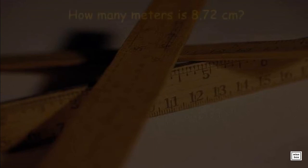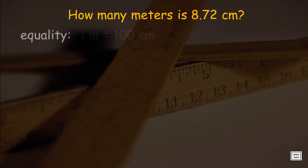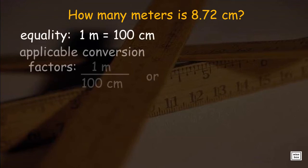Let's try this: how many meters is 8.72 centimeters? Our equality would be 1 meter equals 100 centimeters. These will be our choice of conversion factors.